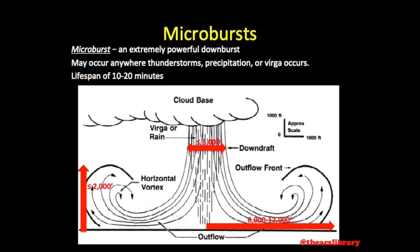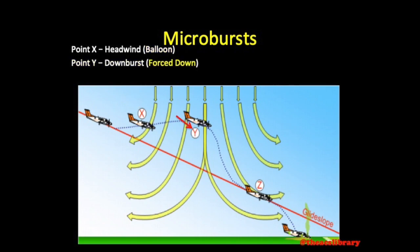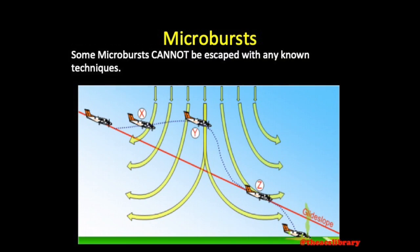The largest hazard associated with the microburst is during landing. On final approach at point X, the aircraft enters the headwind and involuntarily gains altitude. At point Y, the aircraft is violently forced downward. At point Z, the sudden tailwind results in loss of airspeed, potentially causing the aircraft to stall or to land short of the runway. It is important to note that some microbursts cannot be escaped with any known techniques, and extreme caution should be exercised in the presence of a microburst.